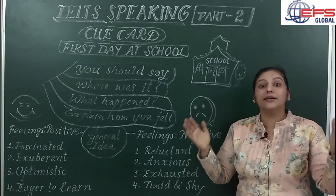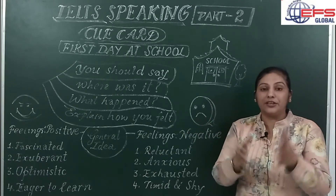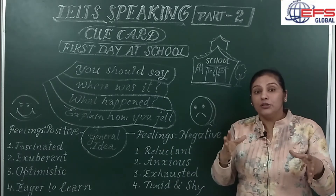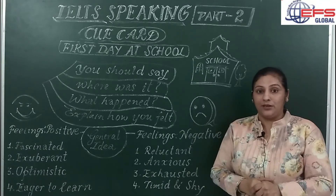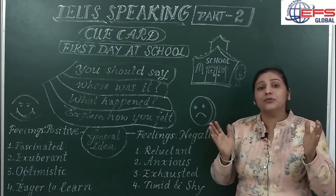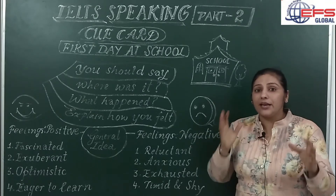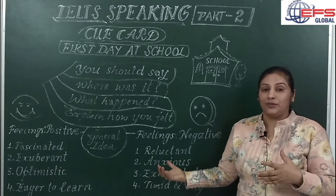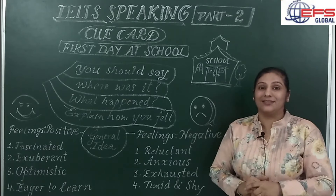Aur aapko ek minute ka time diya jata hai us pure cue card ke uper 2 minute tuk bholne ke liye. Yarni ki total joh time rahata hai, woh 3 minutes rahata hai. Toh 1 minute ke liye aap apni talk ko structure kertay hain. Aur uske baad 2 minute ke liye aapko bholna hota hai. Aksar joh galti candidates kertay hain ki woh jo 1 minute ka joh time hai, that is very productive, aur us time ko bhoot achhe se utilize nahi kar paathe. Us 1 minute ke andar woh un ideas ko collect nahi kar paathe ki woh 2 minutes ke liye bol paai. And here they fail and they are not able to score well in this cue card task.